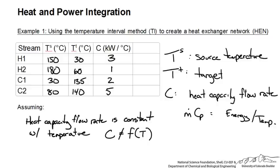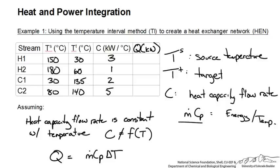If we had a phase change for any of these streams we would have to account for the energy associated with that, or a reaction that might be occurring. For many species the heat capacity won't be constant over a large temperature range, which may require breaking up streams into specific intervals. The heat transfer rate is Q-dot equals MC-dot times delta T, and since we already have MC-dot as our heat capacity flow rate, it is just a matter of multiplying by the temperature difference.